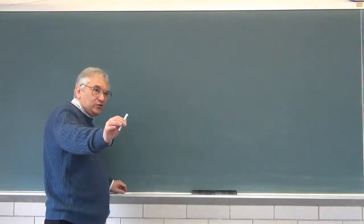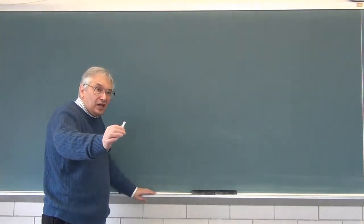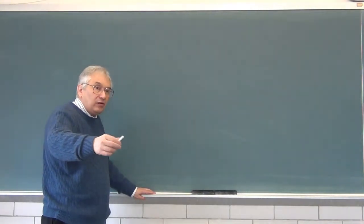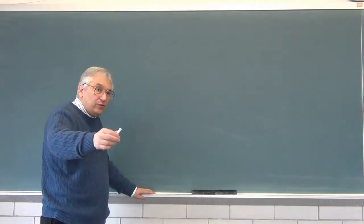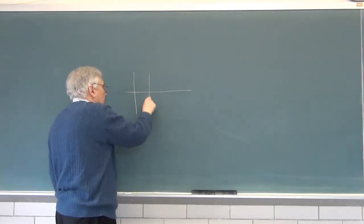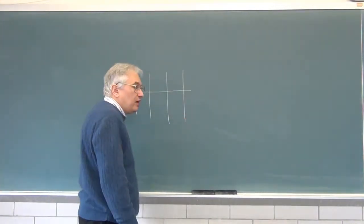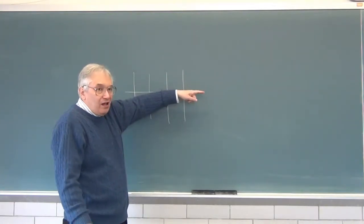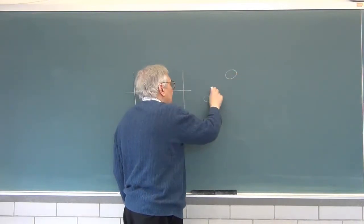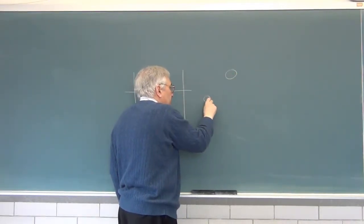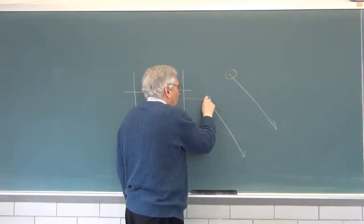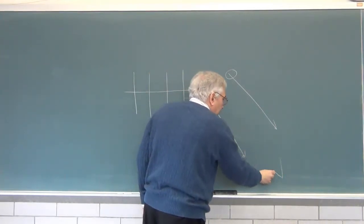So let us sketch how scattering works, and what I'm going to sketch works equally well for x-ray scattering, for electron scattering, for neutron scattering, and for light scattering. So here we have a wave coming in, the cross lines I'm drawing are planes of constant phase.